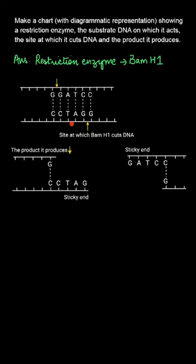In this DNA segment, the BamH1 restriction enzyme cuts the DNA at the site between the two guanines on either of the strands. Once this cut is made, the product is produced.